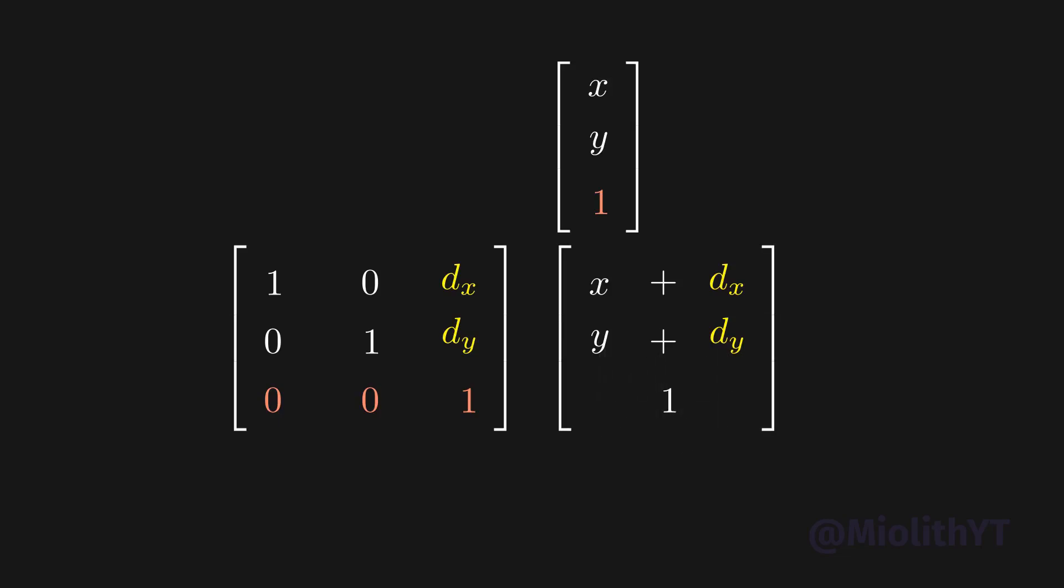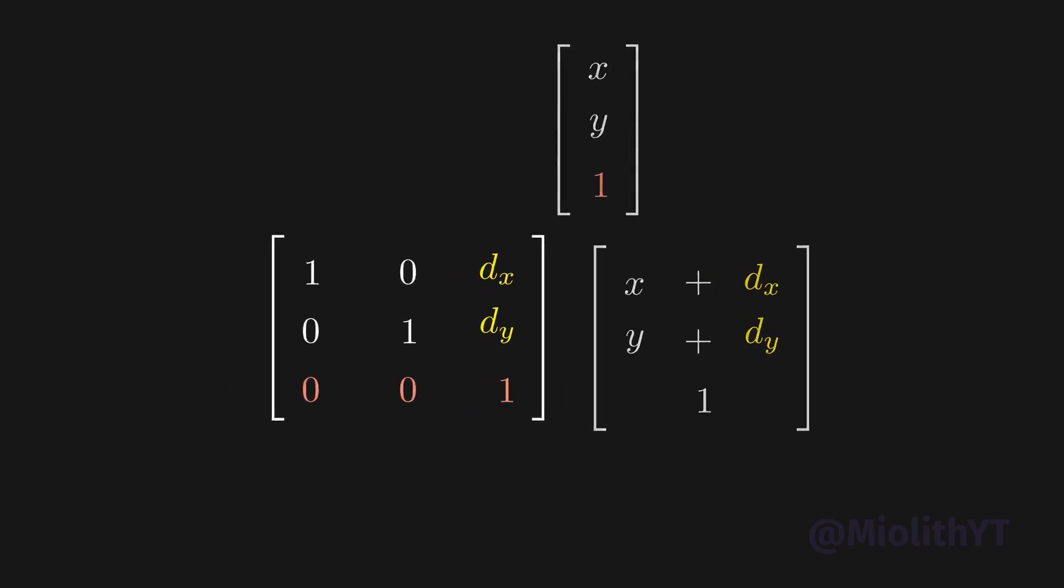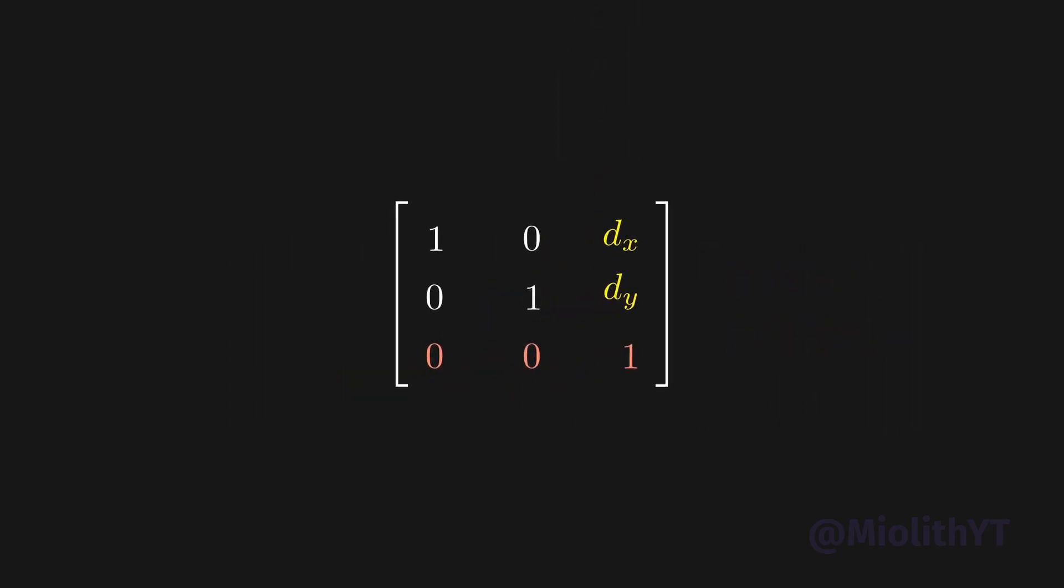OK, but how is that more convenient? Well now, you can put all your transformations in a single matrix again. The previous transformations we've seen can be put at the upper left of the matrix, when you want to apply the translation at the end.